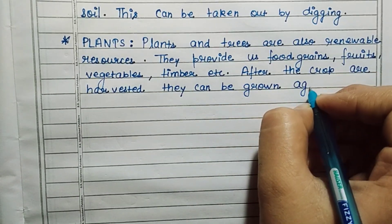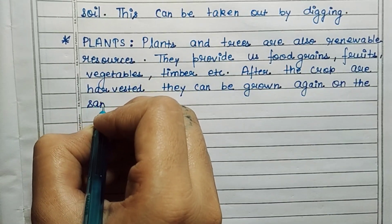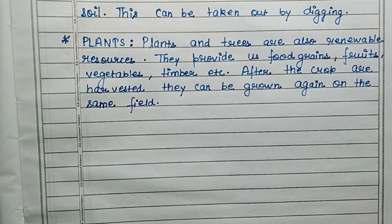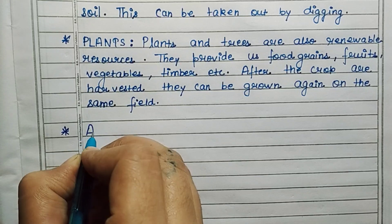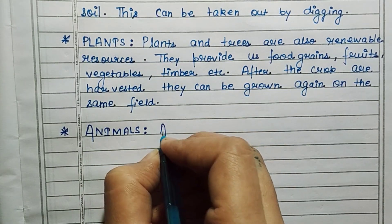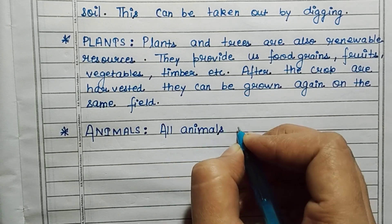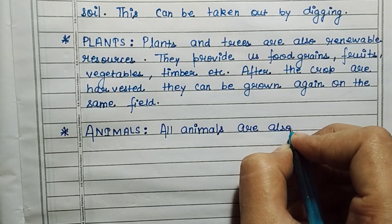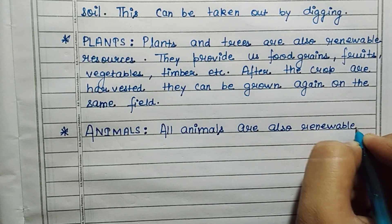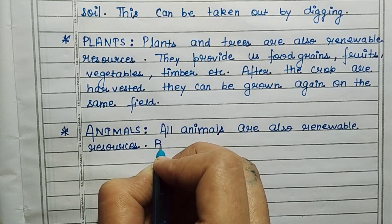Plants provide food grains, fruits, vegetables, timber, and more. After the crops are harvested, they can be grown again on the same field.